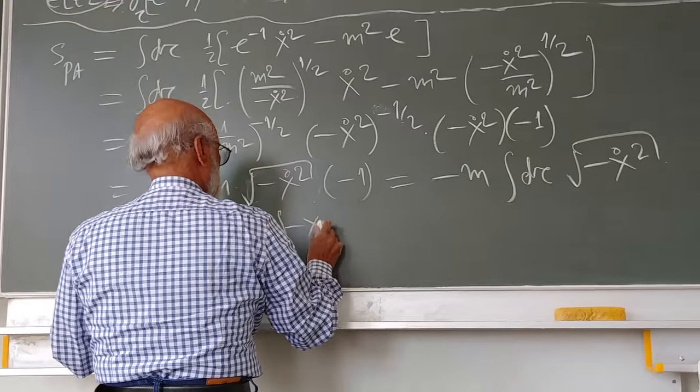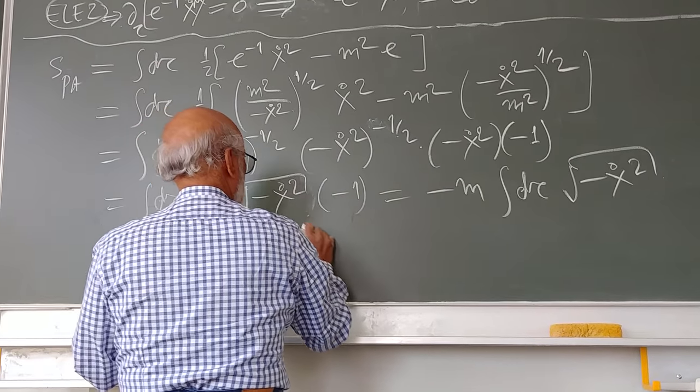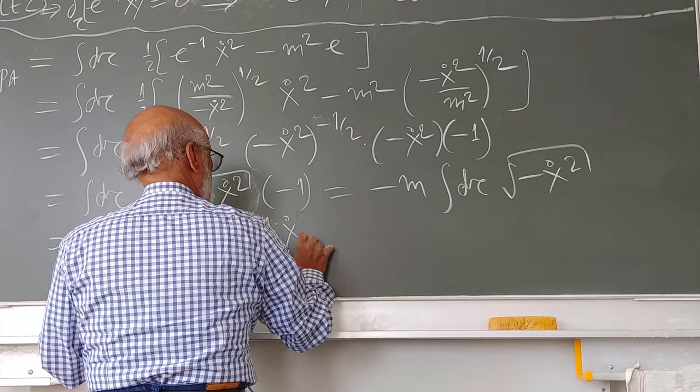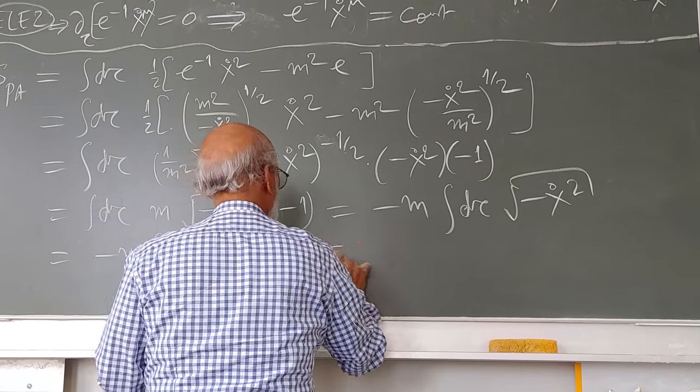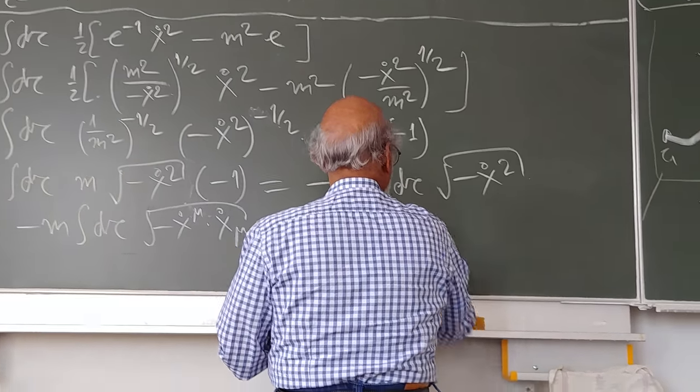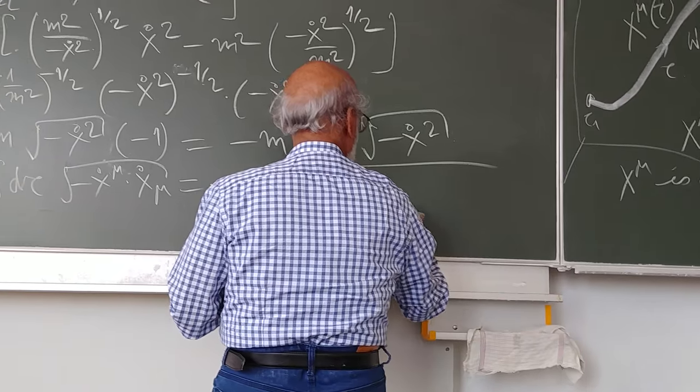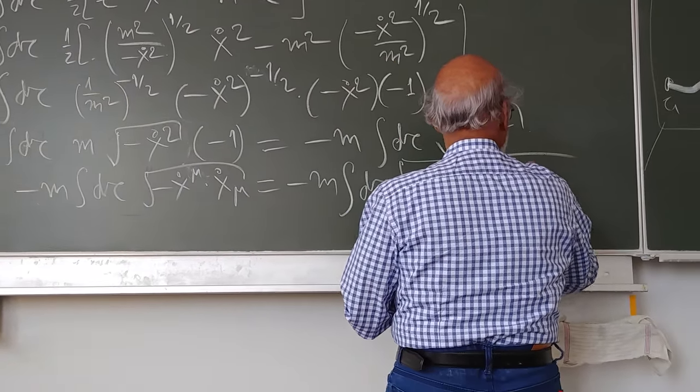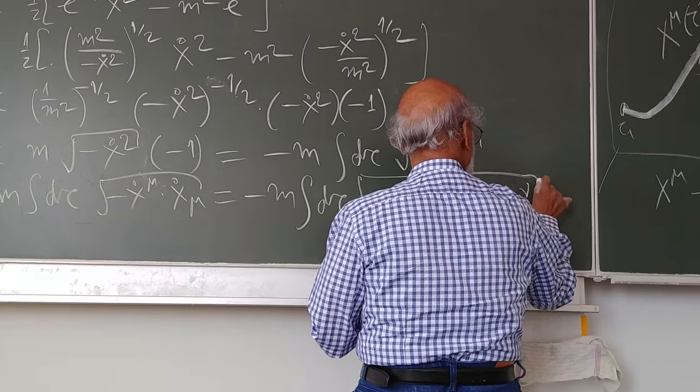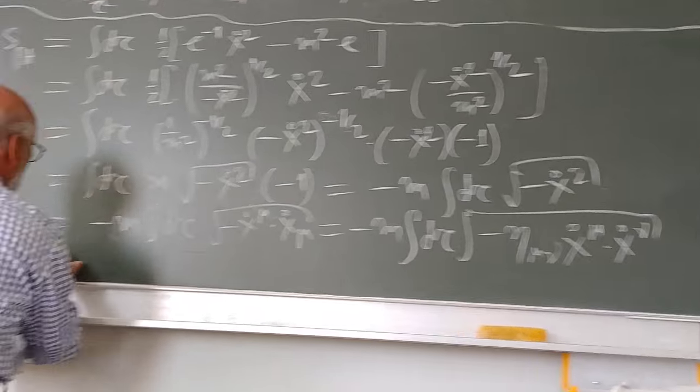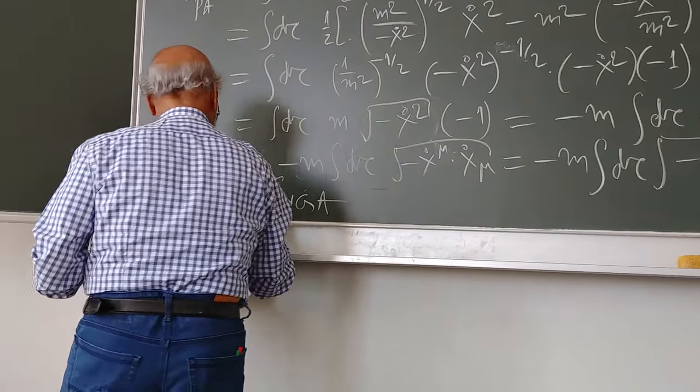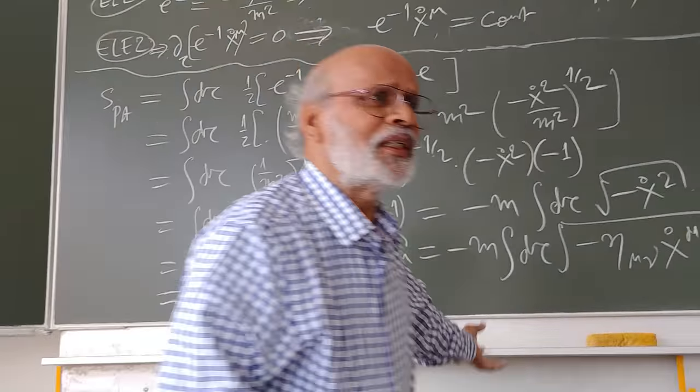It's a very simple algebra, so this you can already see. Minus m d tau, minus x dot x dot mu. This is minus m d tau.